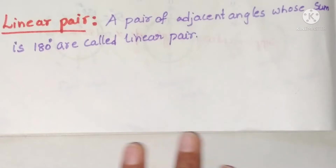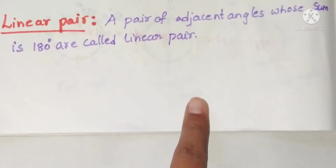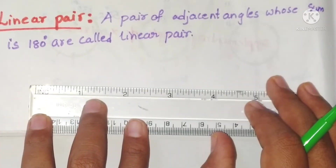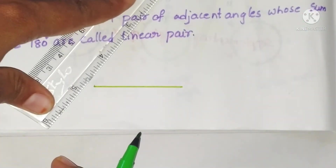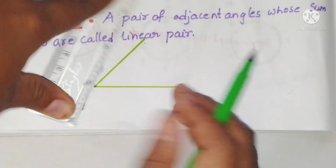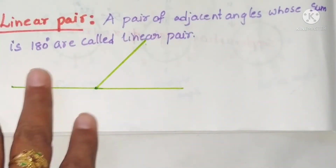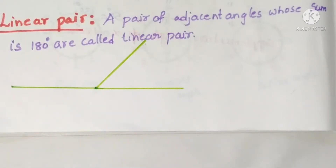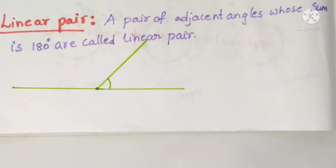Welcome to my channel. Today we will see the linear pair. A pair of adjacent angles whose sum is 180 degrees is called a linear pair. Linear pair of angles should be adjacent angles, and their sum must be equal to 180 degrees — that means they should form a straight line.